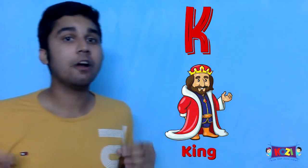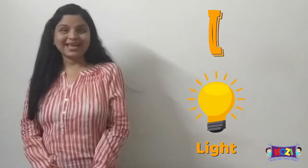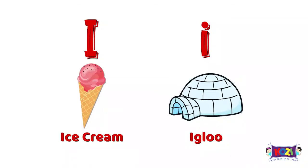K for king, K for kite. L for lemon and L for light.